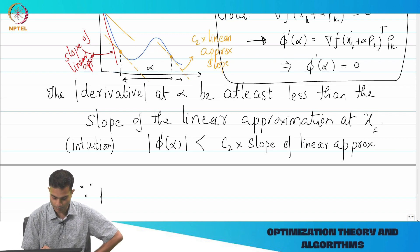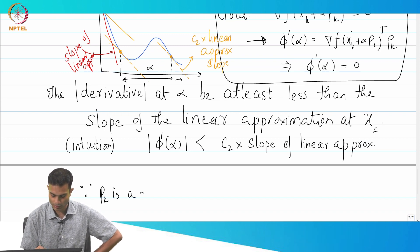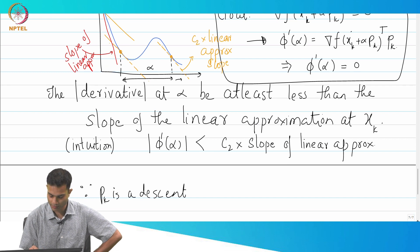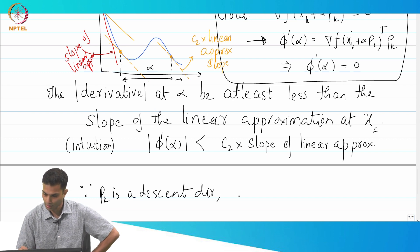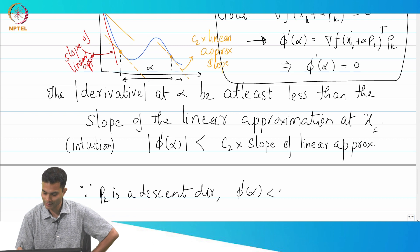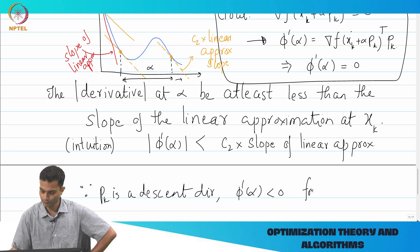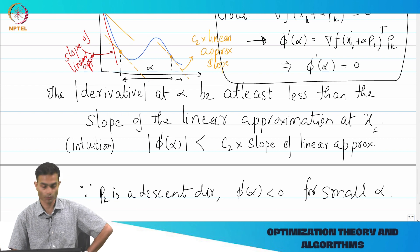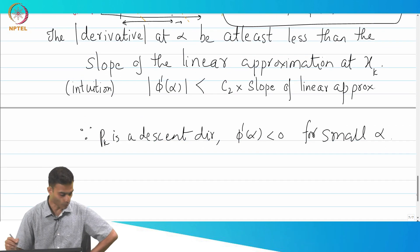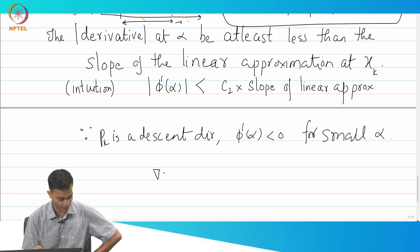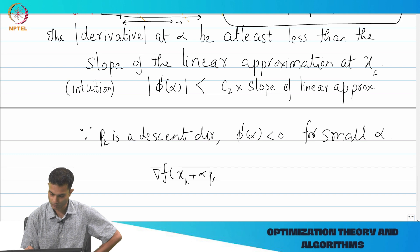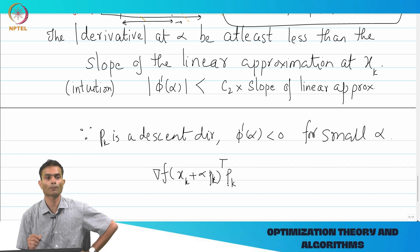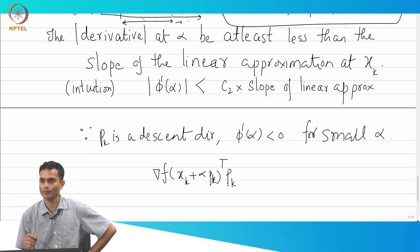So let us note that down: since p_k is a descent direction, φ' of α is less than 0 for small α. I know this. If I want to put a condition on the slope, this is the first thing that I have. This is the slope, but it is less than 0 for small values of α.